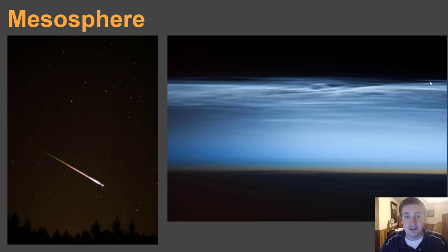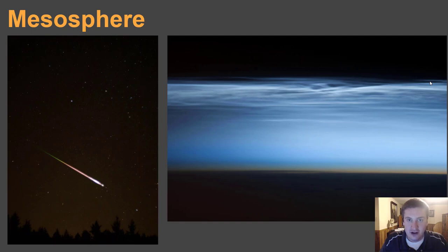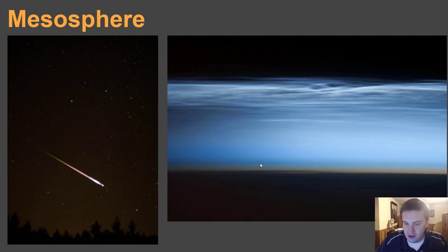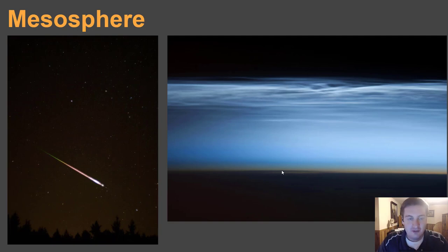The fact that the mesosphere is dense enough to produce significant friction means that objects like meteors, as they enter our atmosphere from above, will start to burn up in the mesosphere. This is where you're going to see the formation of a shooting star. The mesosphere can also contain some eerie-looking clouds made up of mostly ice crystals — you kind of have to be in polar regions during astronomical twilight to see them. It's a cool phenomenon that occurs exclusively in the mesosphere.